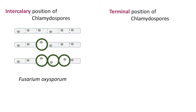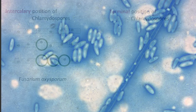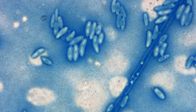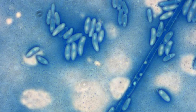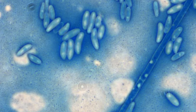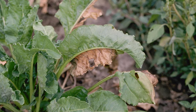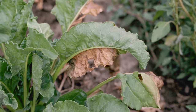Intercalary chlamydospores are situated along the length of the hyphae. This type of chlamydospore location is typical for the plant pathogenic fungus Fusarium oxysporum. They play a crucial role in the long-term survival of fungi during unfavorable periods in the soil and act as the primary inoculum facilitating the infection of plants.